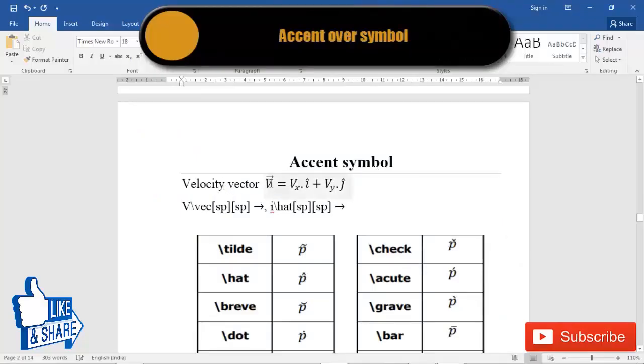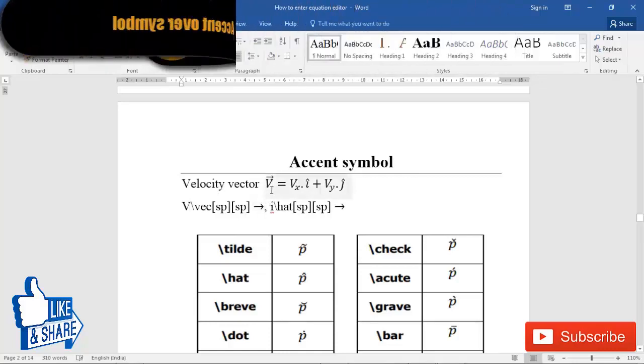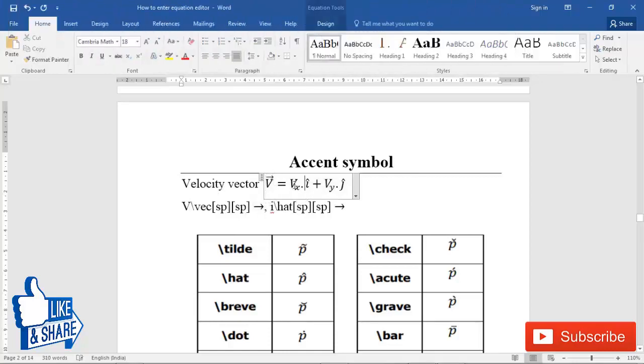This video shows how to add an accent or symbol above text. For example, this vector equation shows vector v equals vx i cap plus vy j cap. So how do we get this arrow bar above vector or this cap bar above a letter?